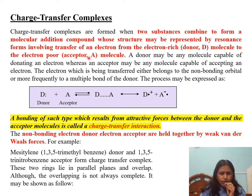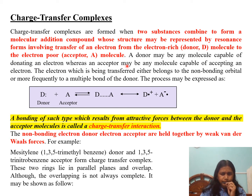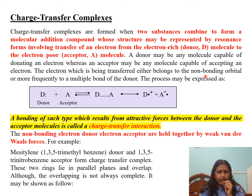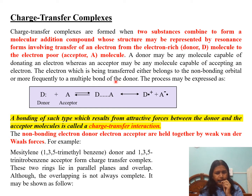Similar to coordination bonds, electrons are transferred from an electron-rich donor to an electron-poor acceptor molecule. A donor is any molecule capable of donating an electron, and an acceptor is any molecule capable of accepting one. The electron being transferred either belongs to a non-bonding orbital or, more frequently, to a multiple bond of the donor — these include pi electrons, non-bonding electrons, or lone pairs.